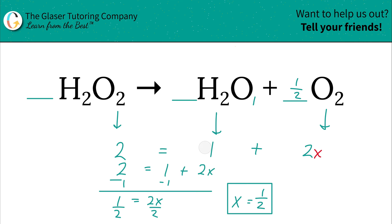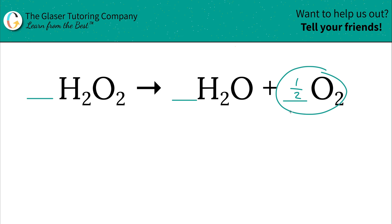Now technically this equation is balanced. But we're not finished. The reason being is because we cannot have a fraction of an oxygen molecule. Either you have a whole oxygen molecule or no oxygen molecule. There is no such thing as half of an oxygen molecule. Just like half of a person isn't a person.